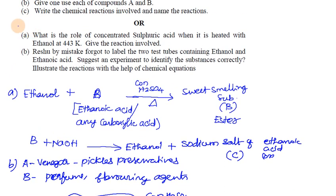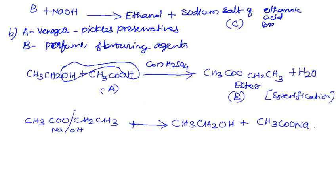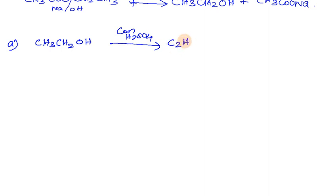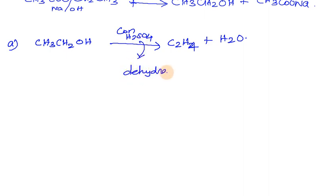What is the role of concentrated sulfuric acid when ethanol is heated at 443 Kelvin? Ethanol (CH3CH2OH) in the presence of concentrated sulfuric acid and heat at 443K gives ethene (C2H4) plus water. Concentrated sulfuric acid acts as a dehydrating agent, removing water.